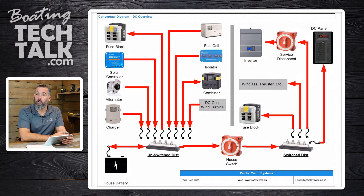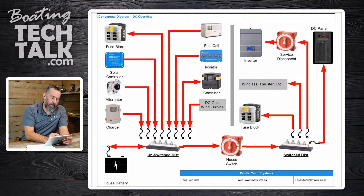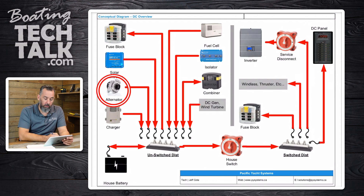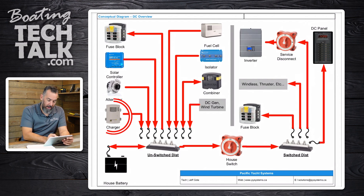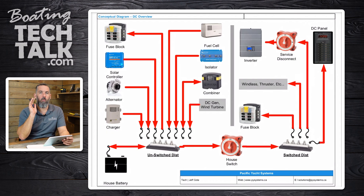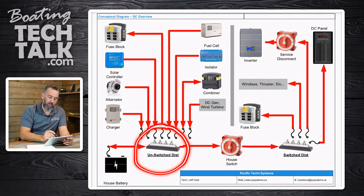There are other circuits as well that should be connected to the battery and never disconnected from the battery. Let's start with the most popular one. Here I'm highlighting an alternator. An alternator is connected always to an unswitched distribution. What else? A battery charger. Battery chargers — if you want your boat to be predictable and normal, you always bring it to unswitched distribution. You can never connect it to the switch distribution.